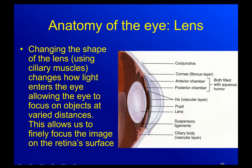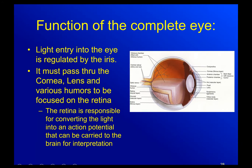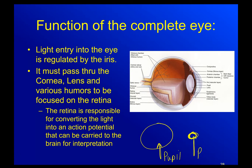The lens changes shape using ciliary muscles from the ciliary body, which alters how light enters the eye. It allows us to focus light onto one spot or spread it out, and its shape varies depending on how far or how close something is to your face, allowing us to finally focus the image on the retina's surface. Light entry is also regulated by the iris, which can make the pupil bigger or smaller to allow a certain amount of light depending on how bright the room is.